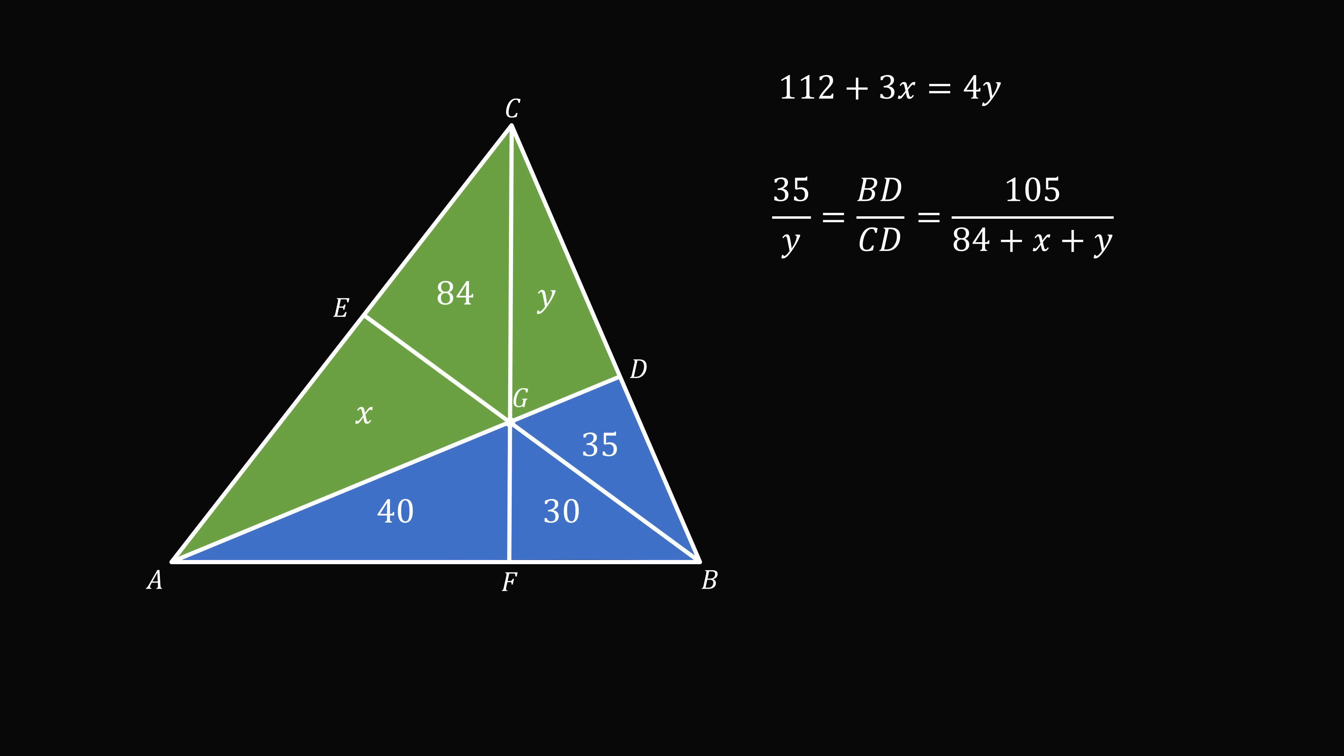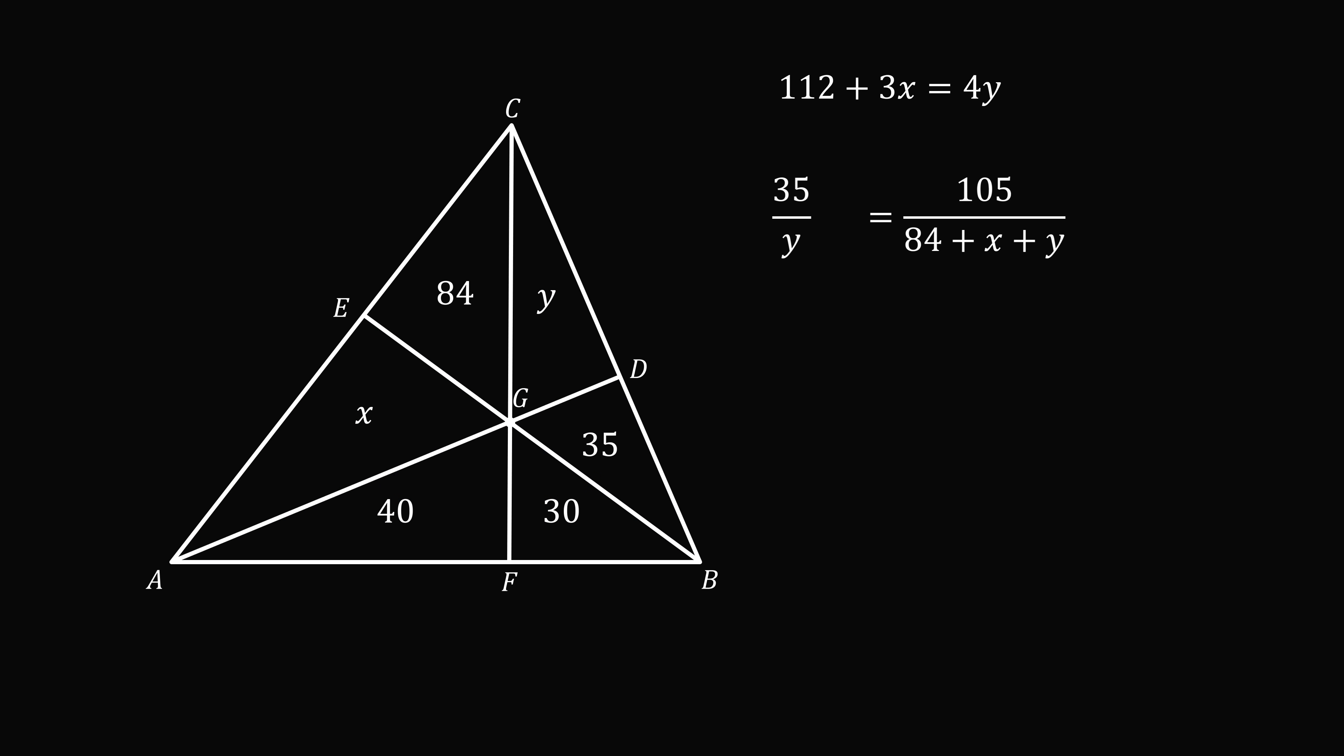So both of these equations are equal to BD over CD. So we can just look at these equations being equal to each other. We now cross multiply and then we can simplify by dividing both sides by 35. So 84 plus x plus y equals 3y, which means 84 plus x equals 2y.